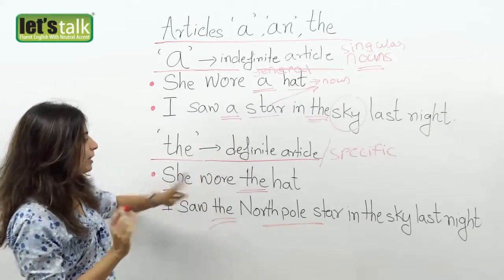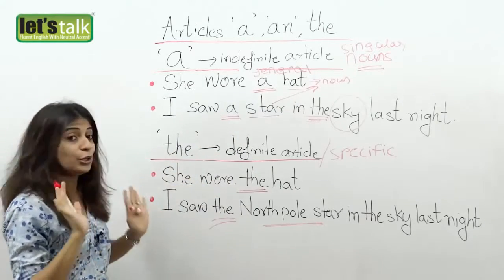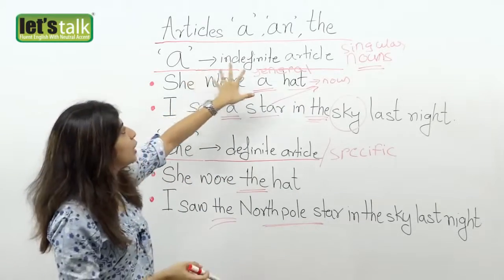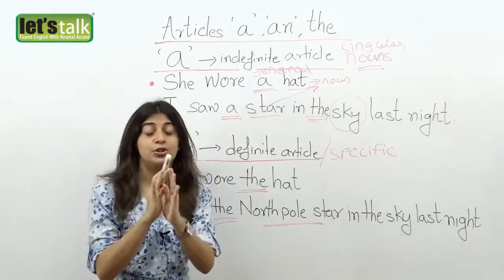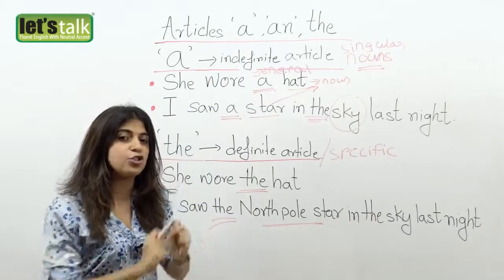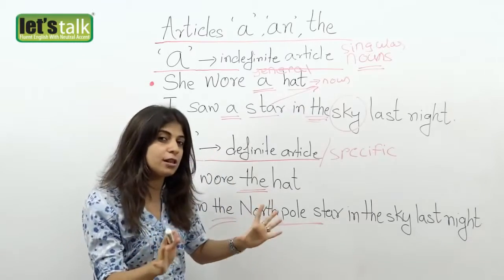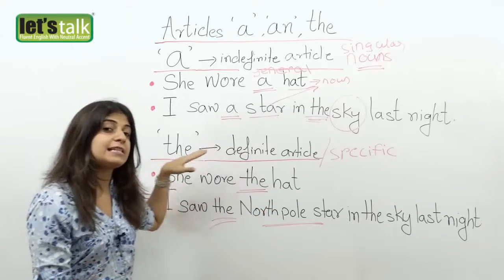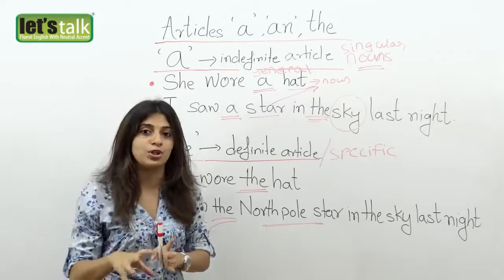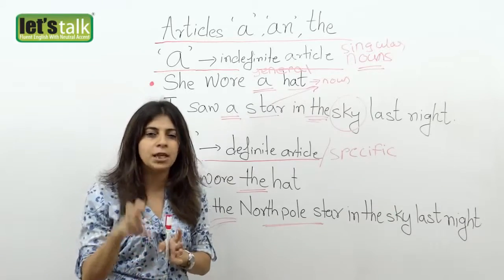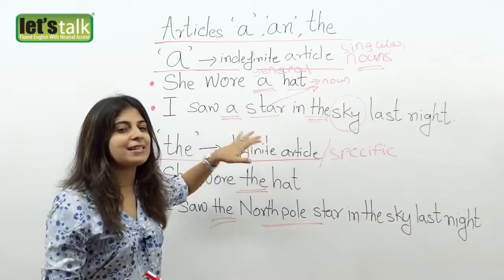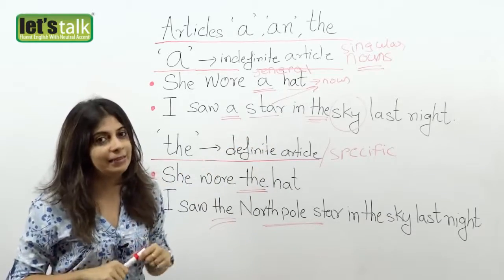So I hope you are clear. You use 'a' when you do not have a specific idea about something — you're just talking in general. Whereas you use 'the' when you know exactly what you are talking about — when you are referring to something particular and specific.